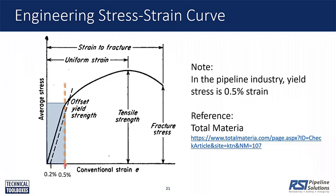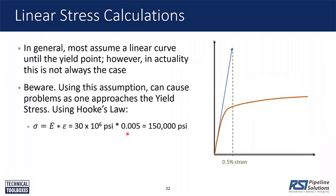The yield point is defined at a strain of 0.5%. If I multiply 30 million by 0.005, I get a stress of 150,000 PSI. This is greater than the grade of a typical line pipe — SMYS ranges from 35,000 for Grade B up to maybe 100,000 for Grade X100. We don't have a line pipe rated at 150,000 PSI. So by using the elastic simplification, I'm getting a yield strength much higher than the actual yield strength of the pipe.